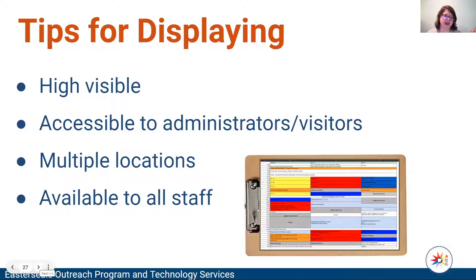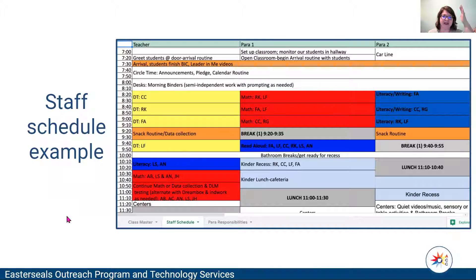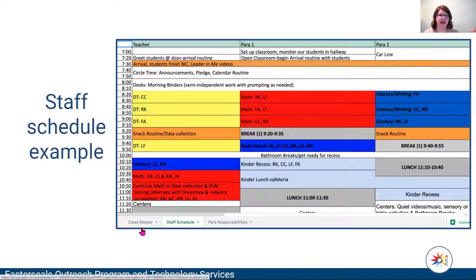Here is our first example — a color-coded example. At the top you have your teacher column and then your paraprofessional columns. They are assigned an activity and students for each activity. If you look toward the bottom, you'll see tabs. This is the class master schedule view, and then we are going to look at the staff schedule next.